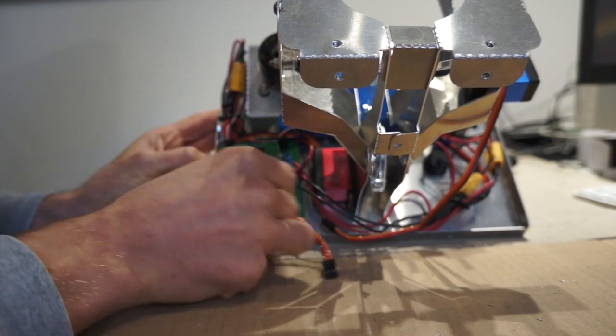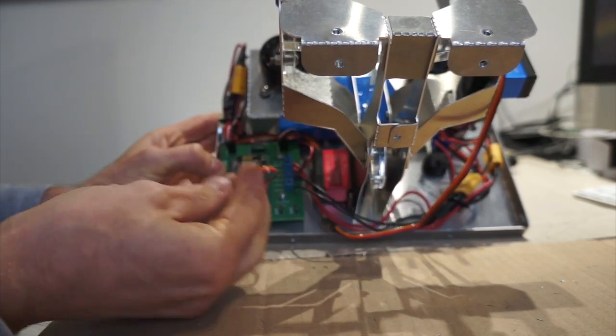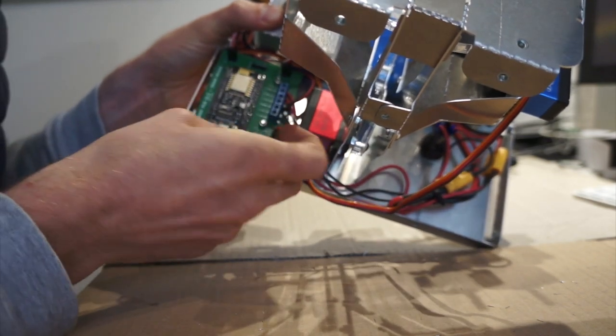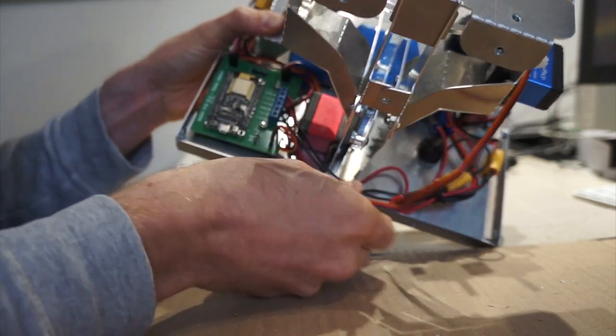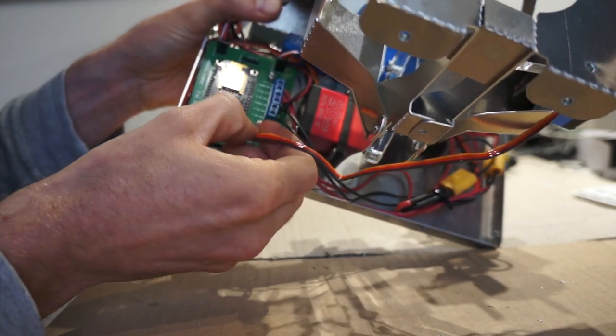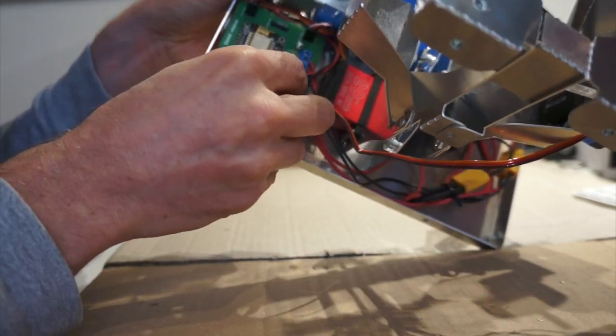So brown color stands for ground. And yellow color stands for signal or command. Same thing with the tilt servo. You can plug it this way. Follow the color code as well. It's indicated on the PCB.